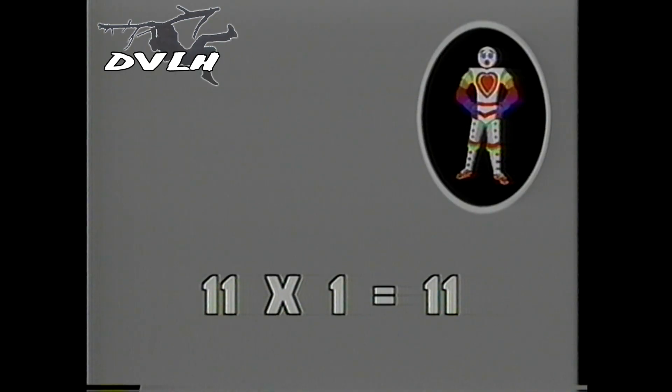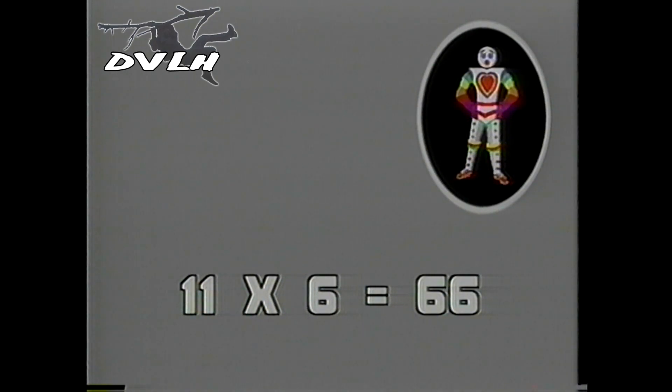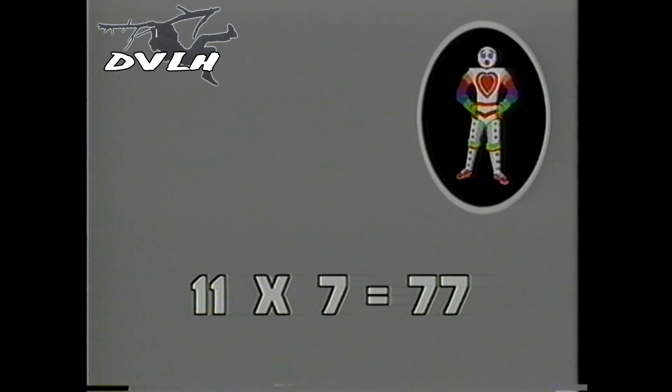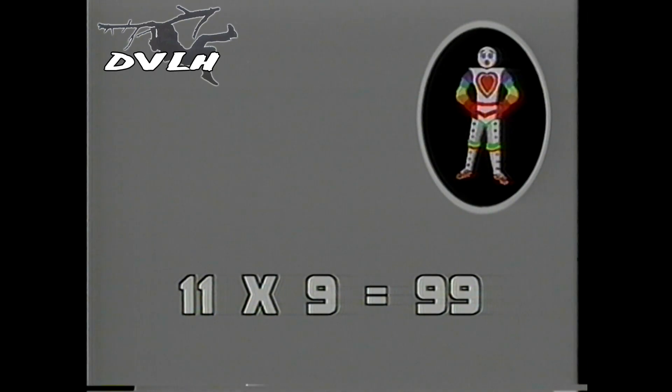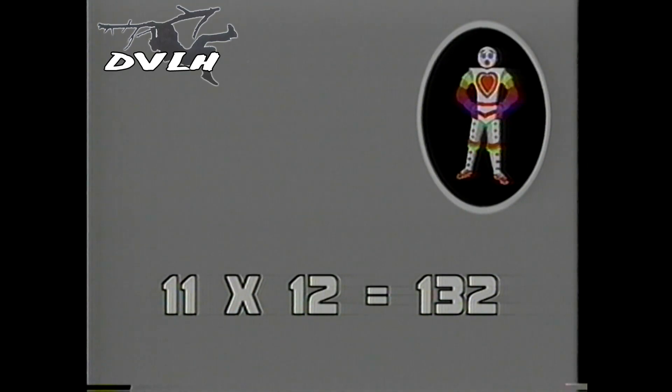Eleven times one is eleven. Eleven times two is twenty-two. Eleven times three is thirty-three. Eleven times four is forty-four. Eleven times five is fifty-five. Eleven times six is sixty-six. Eleven times seven is seventy-seven. Eleven times eight is eighty-eight. Eleven times nine is ninety-nine. Eleven times ten is a hundred and ten. Eleven times eleven is a hundred and twenty-one. Eleven times twelve is a hundred and thirty-two.